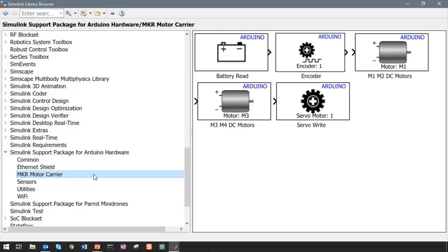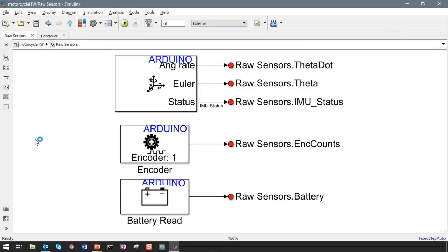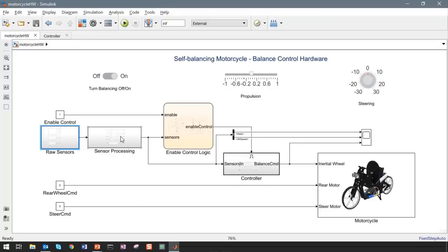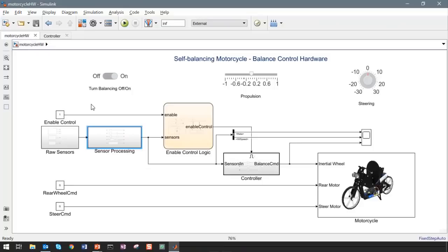Now, let's look at the hardware model and see how it is different from the simulation model. The first thing we can see on the sensor side is that now there are two subsystems. One subsystem, the raw sensors, gets the sensor inputs. Here is where we are using the sensor blocks from the hardware support package. We see the encoder, the IMU, and the battery blocks. There is also a sensor processing subsystems to get the derived values from the hardware because sensors may not always provide the measurement in the form that you want or need for your algorithms.